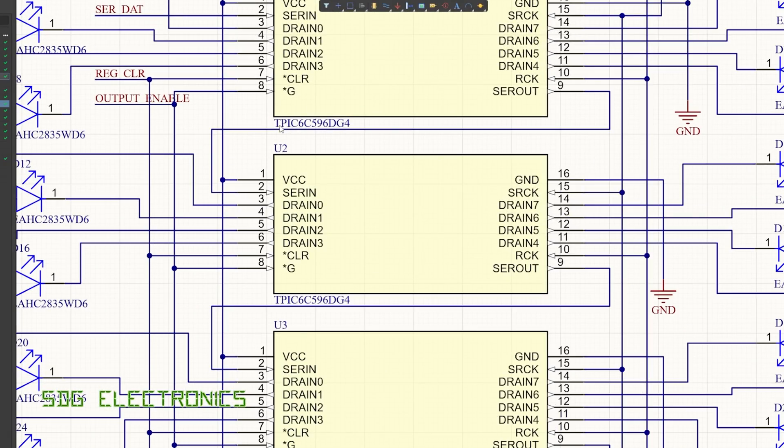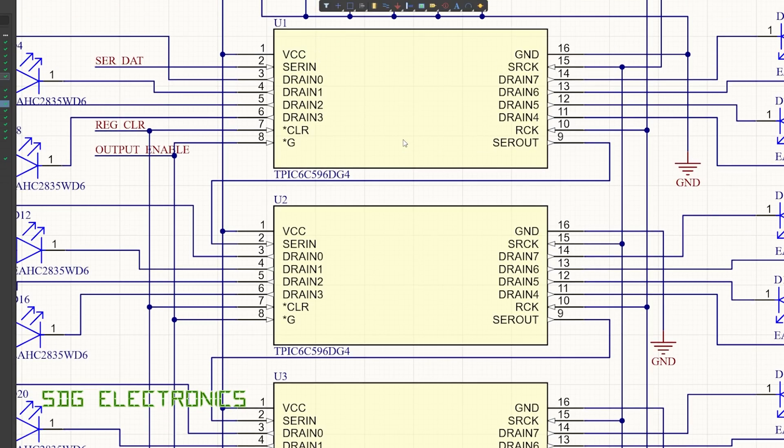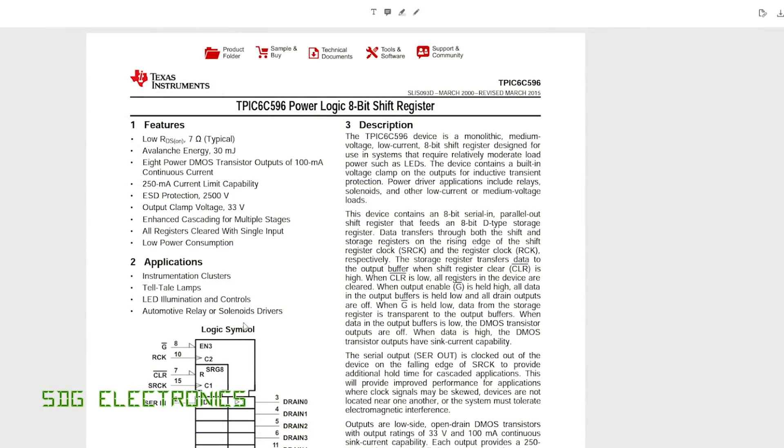What we're using here is these Texas Instruments TPIC 6C596 shift registers with high current output. These are open collector outputs but they have a higher current capability than the standard 74HC595. These LEDs are designed to be run somewhere around 50 or 60 milliamps and then with the PWM capability we're able to dim those right down.